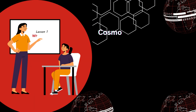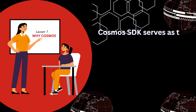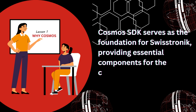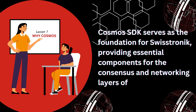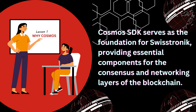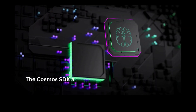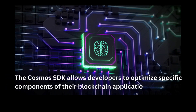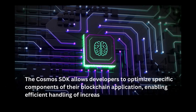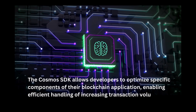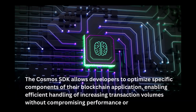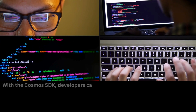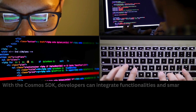The Cosmos SDK serves as the foundation for Swistronic, providing essential components for the consensus and networking layers of the blockchain. The Cosmos SDK allows developers to optimize specific components of their blockchain application, enabling efficient handling of increasing transaction volumes without compromising performance or security.